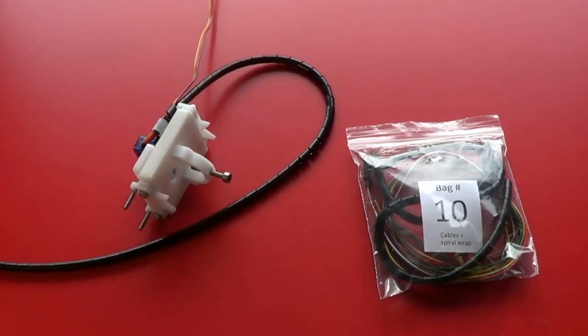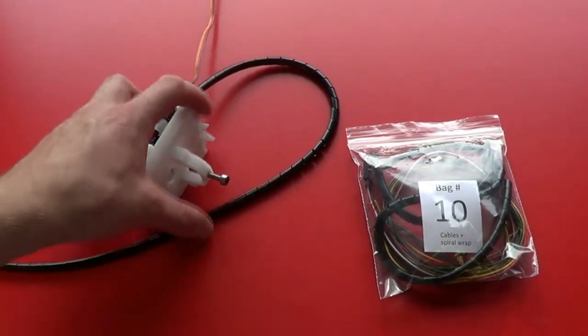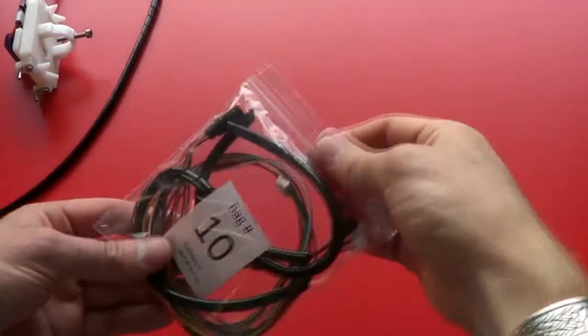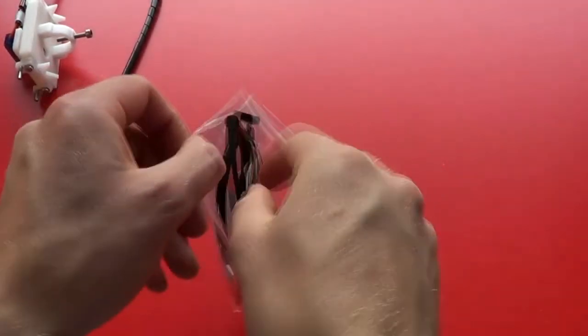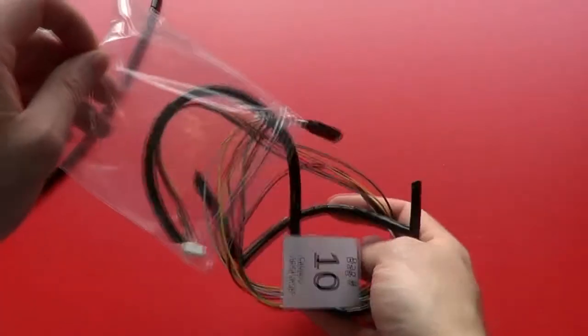Here we're going to do some of the electrical wiring. So open up bag number 10, which has various cables and spiral wrap inside it.